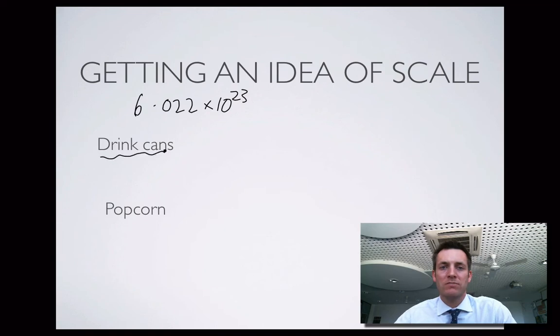To give you an idea, if you had drinks cans, so just cans of Coke, and you had this number of them, you'd be able to form a blanket of drinks cans that would cover the entire planet - not just the land surface, but the water surface as well. Stood side by side, you'd be able to cover the entire planet with drinks cans.